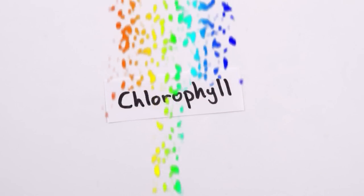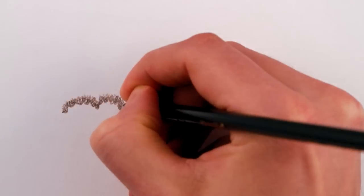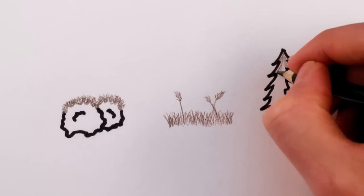Chlorophyll is great at absorbing reds and blues, but if it were really awesome, wouldn't it absorb all colors of light, green included, giving us a world full of black moss and black grass and ever-black trees?